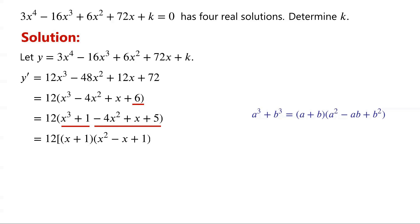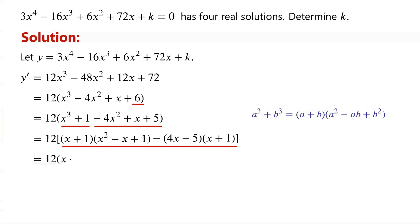Negative 4x squared plus x plus 5 can be written as (negative 4x minus 5)(x plus 1). Now the two terms in the brackets have a common factor of x plus 1. Therefore, we can factor them as (x plus 1)(x squared minus x plus 1 minus 4x plus 5).